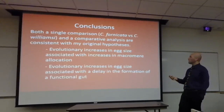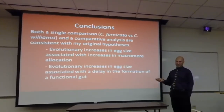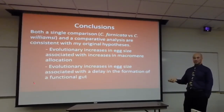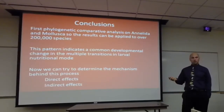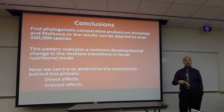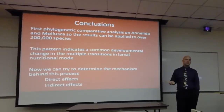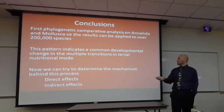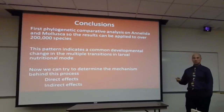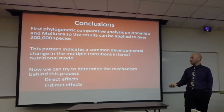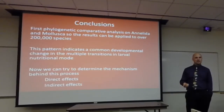Conclusion: both the single comparison of Crepidula fornicata and Crepidula williamsae and the phylogenetic comparative analysis are consistent with both original hypotheses — evolutionary increases in egg size are associated with increased macromere allocation, and with a delay in the formation of a functional gut. This is the first phylogenetic comparative analysis on mollusks and annelids with respect to development, and the results can be applied to over 200,000 species. This pattern indicates a common developmental change across multiple transitions in larval nutritional mode; future work can determine whether the increased macromere allocation is a direct or indirect evolutionary effect.